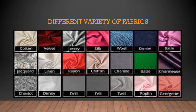Now you can also identify some fabrics. On your screen you can see different fabrics: cotton, velvet, jersey, silk, wool, denim, satin, linen, rayon. There are different kinds and variety of fabrics. They are made from different fibers and their sources are different. So in this lesson, you are going to learn about how, from the source, the clothes are made.